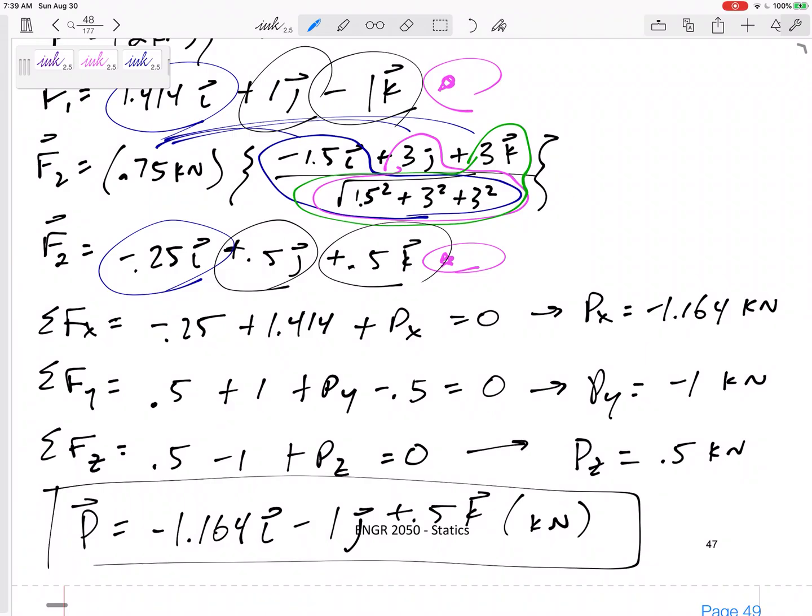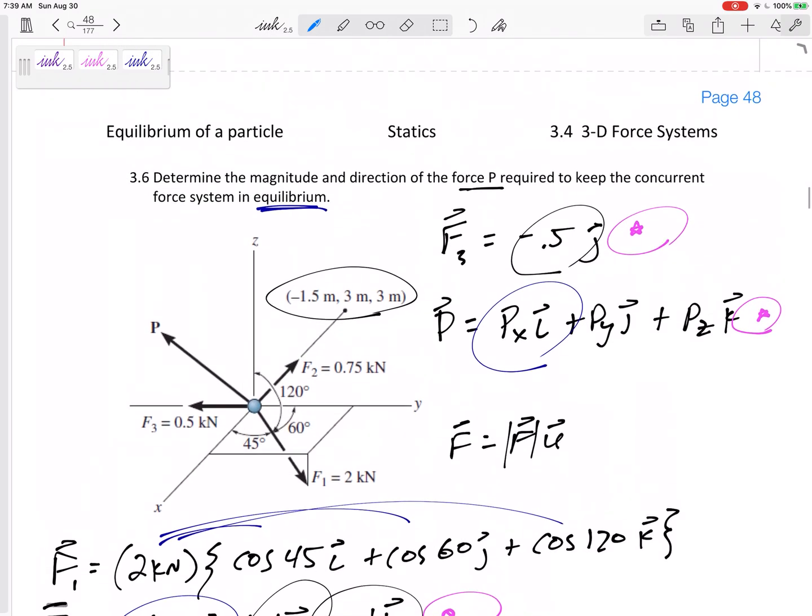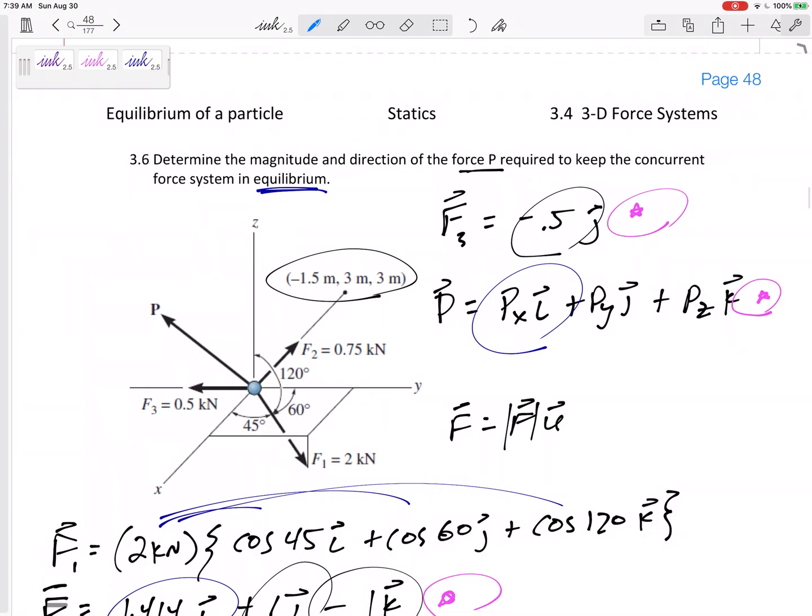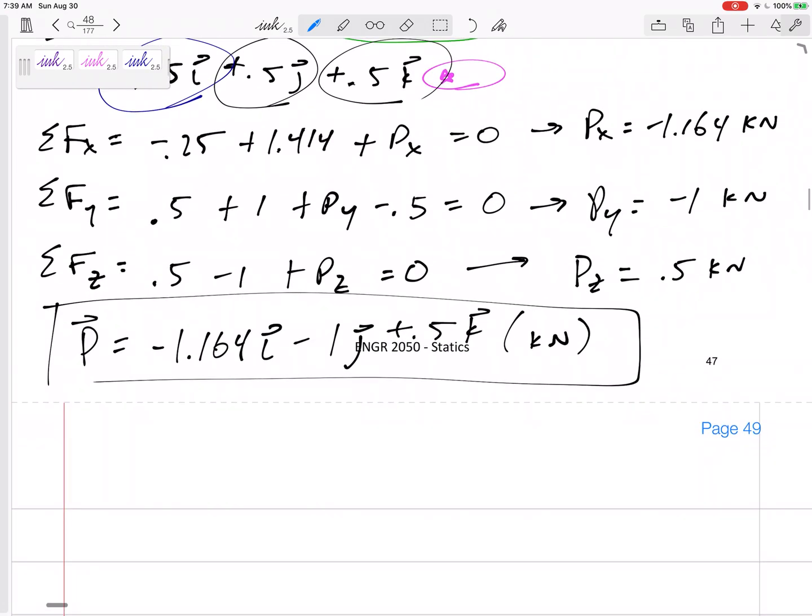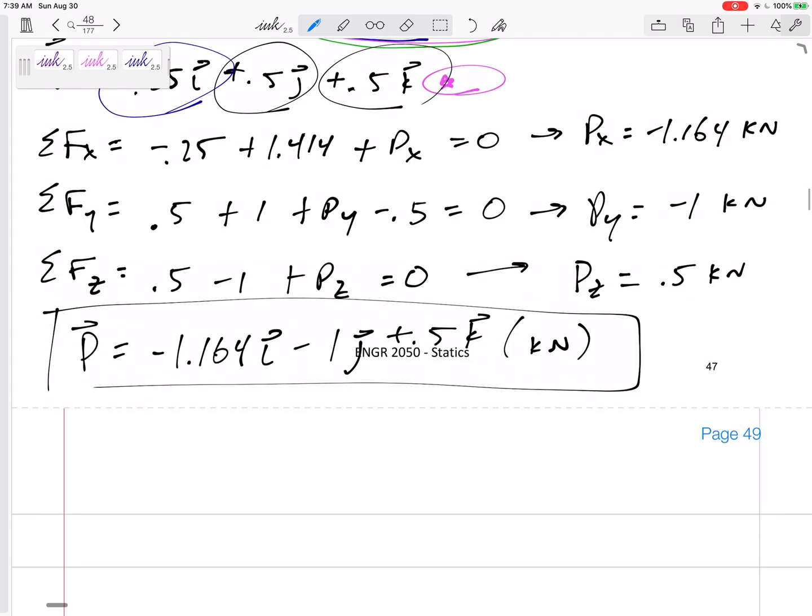All right, so this last one, I messed up. I didn't answer the question exactly. The question asks for the magnitude of force P and the direction of force P. So this is force P written as a Cartesian vector, which many times that's all it's really asking for, but it wants a magnitude and coordinate direction angles.